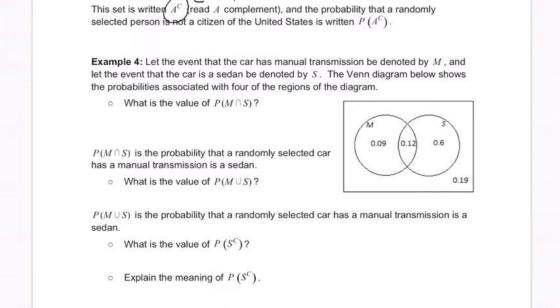What is the value of M intersect S? The probability there's a manual transmission and the car is a sedan. That's the intersection right here, so you can say 0.12. The probability of M and S is the probability that a randomly selected car has a manual transmission and is a sedan.